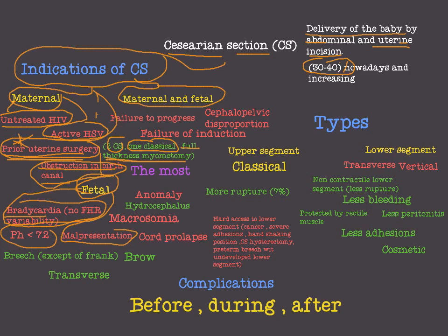Malpresentation is another fetal indication. This includes breech presentation, except frank breech — if it is frank breech, we can try normal vaginal delivery. But for footling breech or other types, we apply caesarean section. Also brow presentation, face presentation, and transverse presentation are all indications for caesarean section. Macrosomia is also an indication.